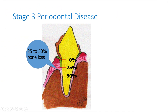Stage 3 periodontal disease is when the bone loss is between 25 and 50% of the length of the root. The gums are inflamed and painful and your pet is really uncomfortable. Some of these teeth can be saved with advanced procedures but usually pet owners decide to have them extracted.